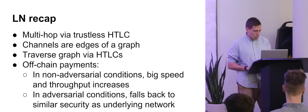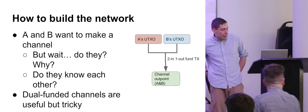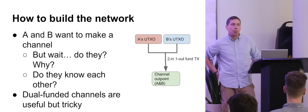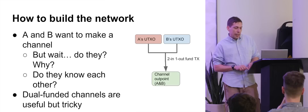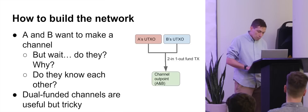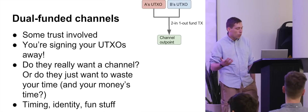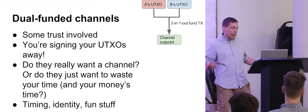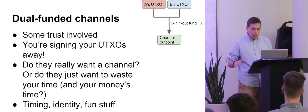This is fairly well known by now. But how do you build this network? Assuming the software works great, A and B want to make a channel — but do they equally want to? Do they even know each other? You want this to work in an anonymous setting where people don't trust each other and are adversarial. Dual-funded channels are very useful but actually pretty tricky, because you need this confluence of wants where both A and B fund the channel and create a multi-sig address together. There's some trust involved because you're signing your UTXOs with someone you may not know. Maybe they just want to waste your time.